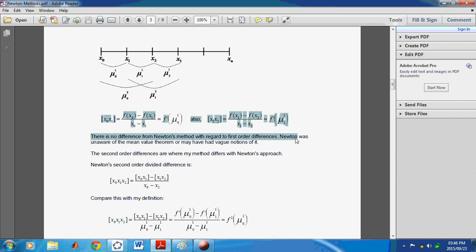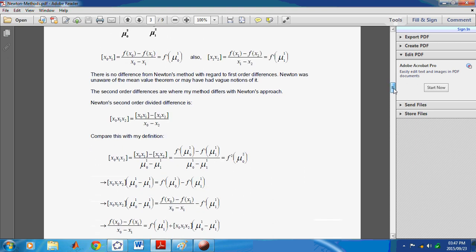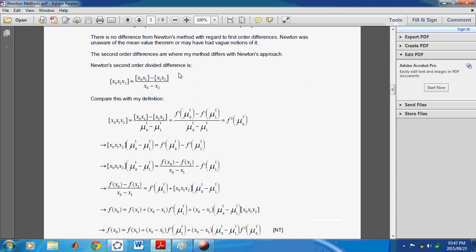So, with respect to first order differences, there is really no difference between my scheme and Newton's because our first order differences are exactly the same. However, when we get to the second order differences, that's when my method differs with Newton's approach. So, Newton's second order divided difference is given here, where you see me highlighting. But compare this with my definition. Now, notice the main distinction comes in the difference, the finite difference that appears in the denominator.